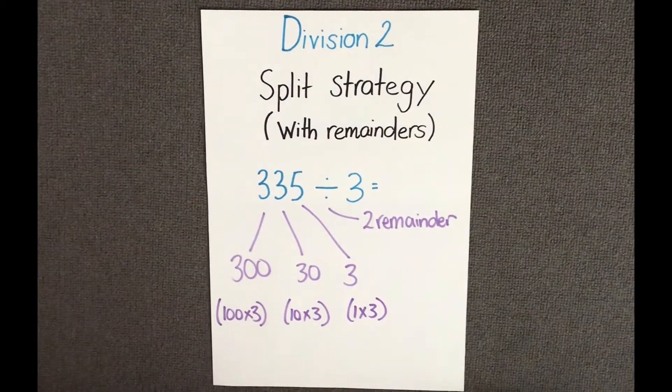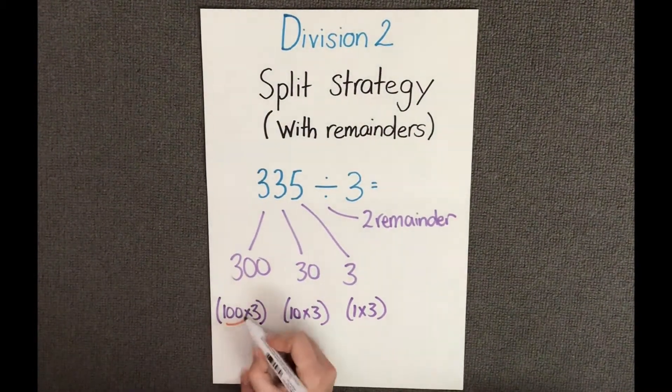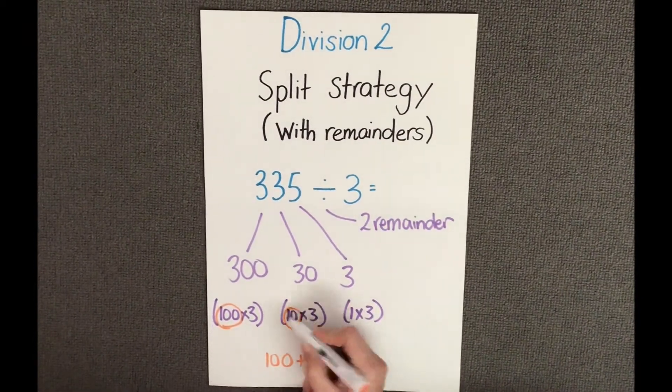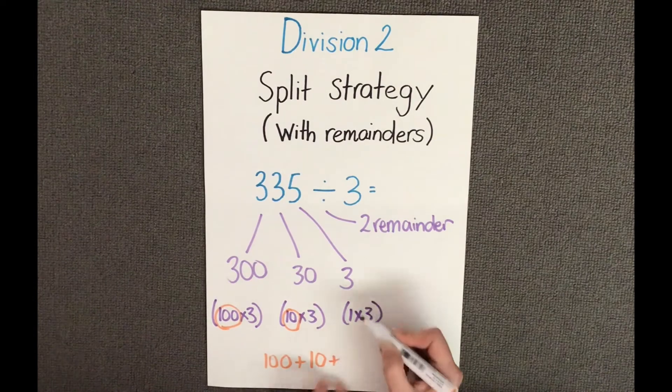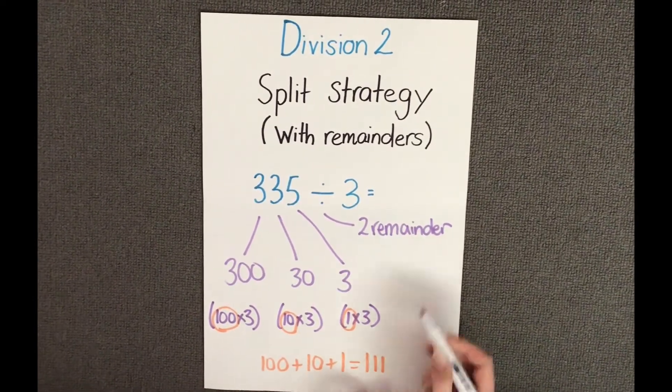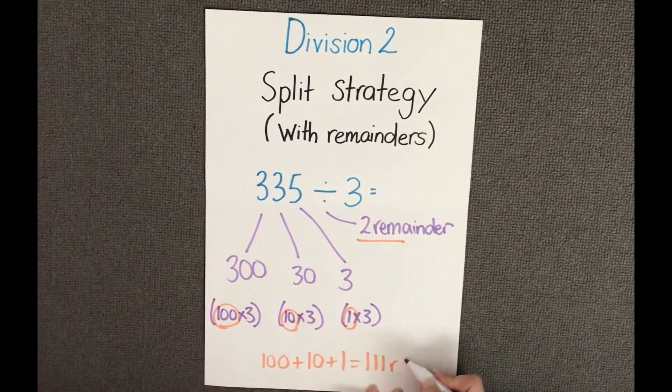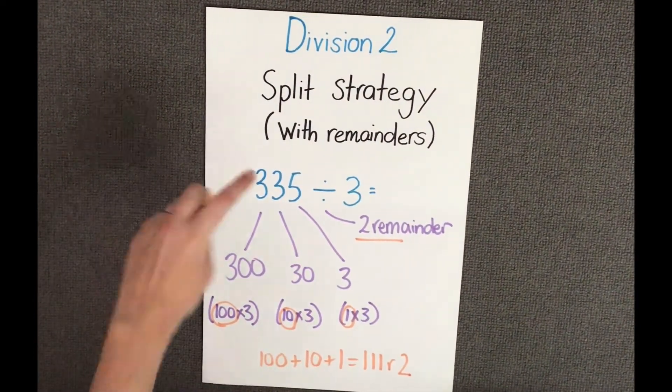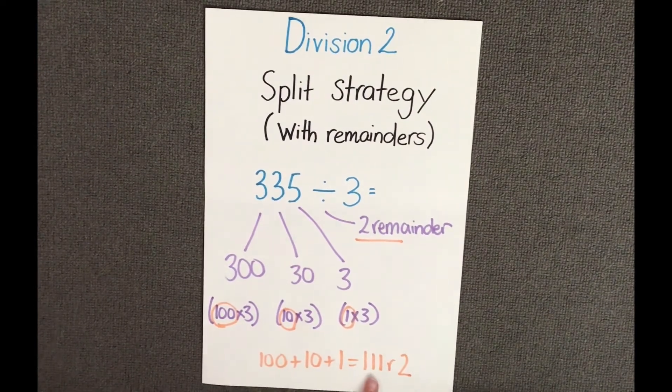Finally, let's combine our totals. So we have 100, add 10, add 1, which gives us 111. And I have to remember my remainder too. Therefore, the answer to 335 divided by 3 equals 111 remainder 2.